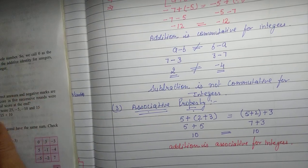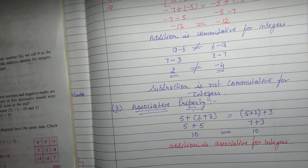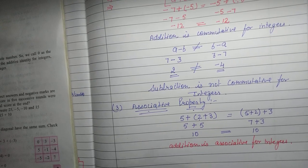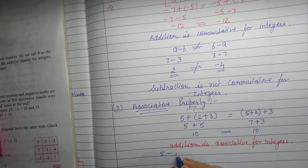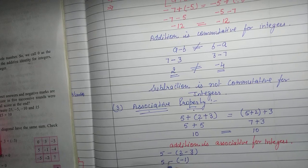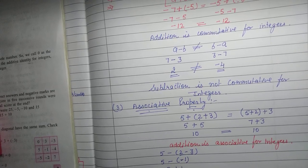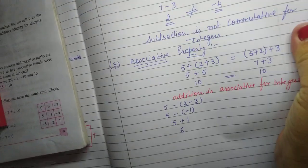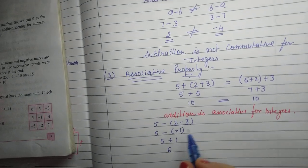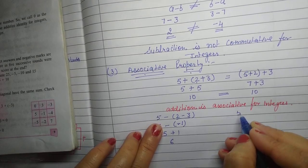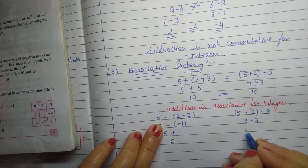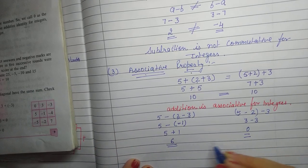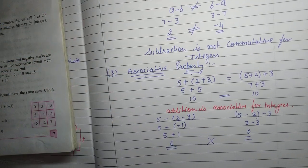Now if instead of addition we subtract numbers, does this property still apply? Let's see: 5 minus 2 minus 3 — solving this gives minus 6. Now changing the grouping: (5 minus 2) minus 3 — 5 minus 2 is 3, and 3 minus 3 is 0. The results minus 6 and 0 are not the same, so subtraction is not associative for integers.